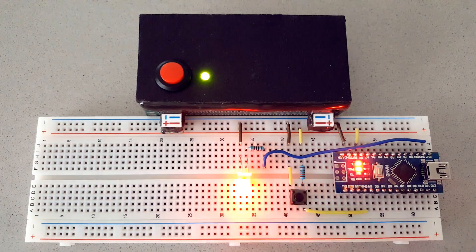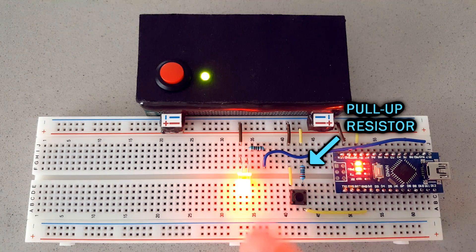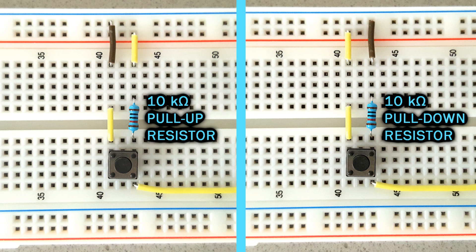But if the button is connected to ground, then we will need a pull up resistor connected to 5 volts. Pull down or pull up just refers to where the resistor is connected.